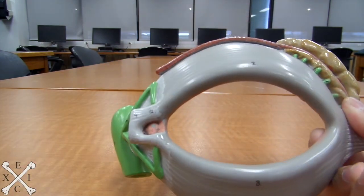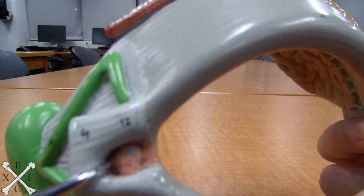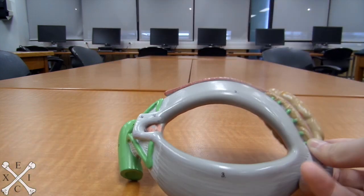The last structure we'll be looking at is your lacrimal caruncles, which is this pink part right here. And that's it, guys.